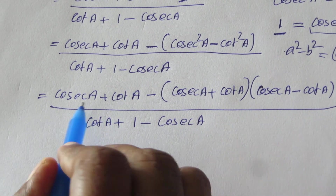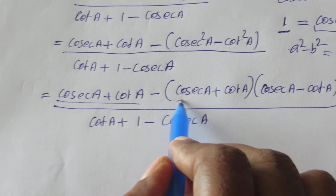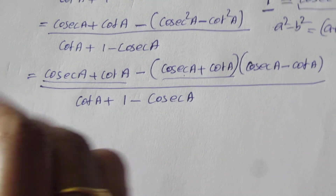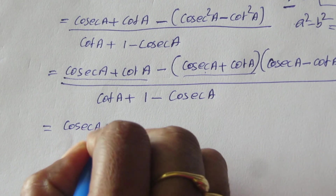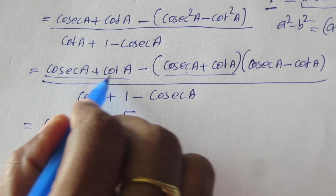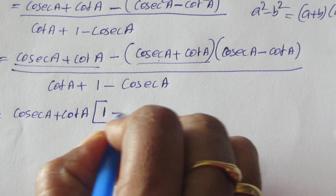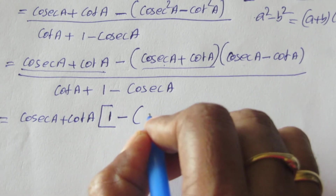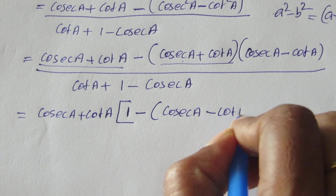Now students, we observe that cosec a plus cot a appears as a common factor in both terms of the numerator. So we take out cosec a plus cot a. The remaining factor inside becomes 1 minus cosec a minus cot a, giving us cosec a plus cot a times that bracket, divided by cot a plus 1 minus cosec a.